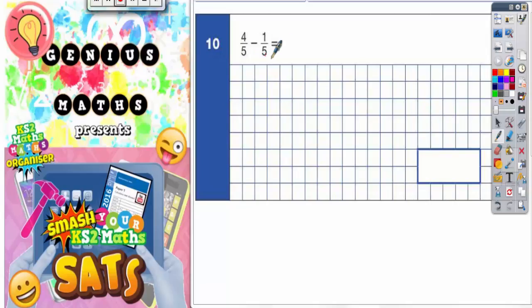Question 10. Four fifths take away one fifth. Now the thing to notice here, this is an easy one because the denominators are the same. We're dealing with fifths in both of these.